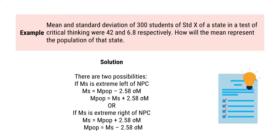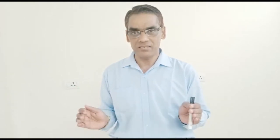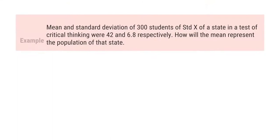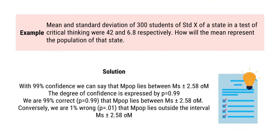If the sample mean is at the extreme right — a positive deviation — then sample mean equals population mean plus 2.58 sigma m, so population mean equals sample mean minus 2.58 sigma m. We are going to find a range within which our population mean lies. We do not have the exact value of the population mean. With 99% confidence, we say that our population mean lies between sample mean plus minus 2.58 sigma m. The degree of confidence is expressed by 0.99, meaning probability is 0.99 — we are 99% correct that the population mean lies between sample mean plus minus 2.58 sigma m.